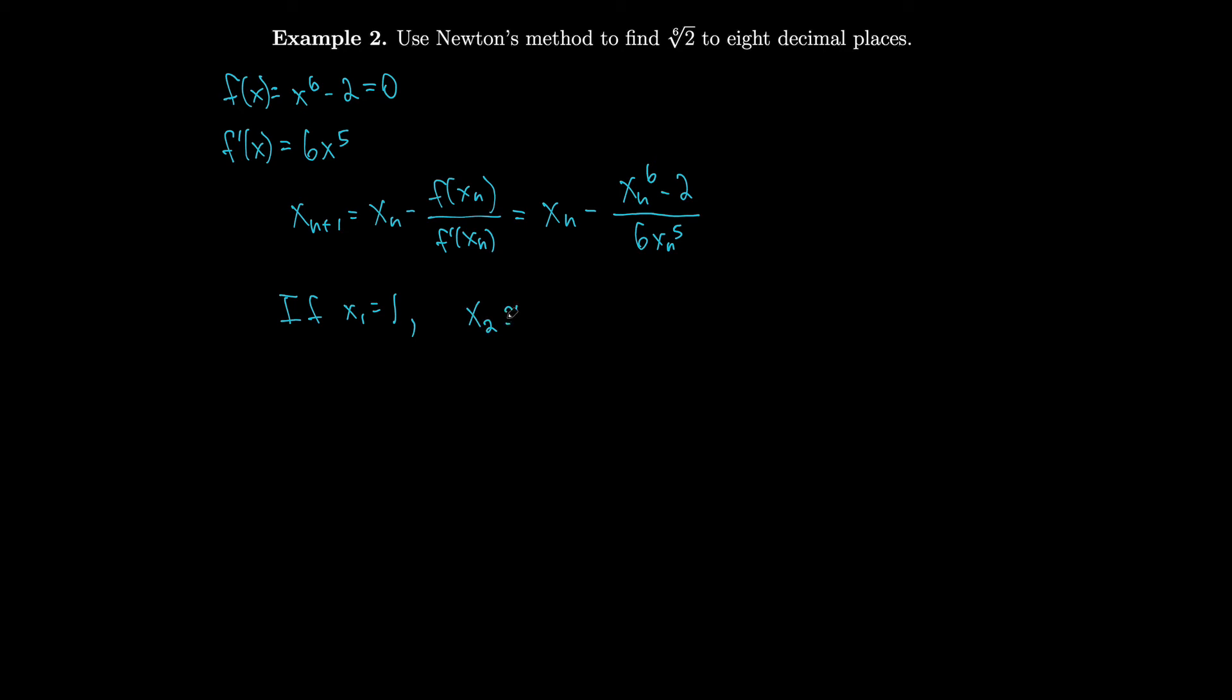Then x₂, if we plug in one here, ends up being 1 - (1⁶ - 2)/(6·1), which is about 1.16666667. And x₃, if we plug in x₂ to that process and do it all over again, we get 1.12644368.